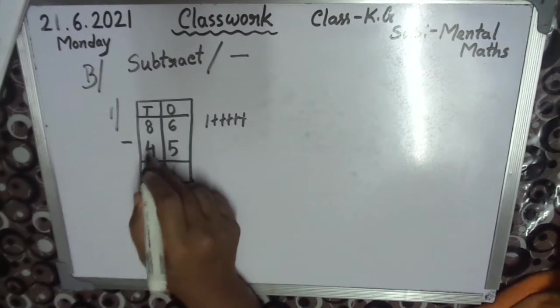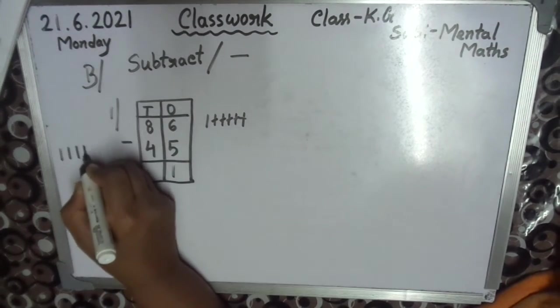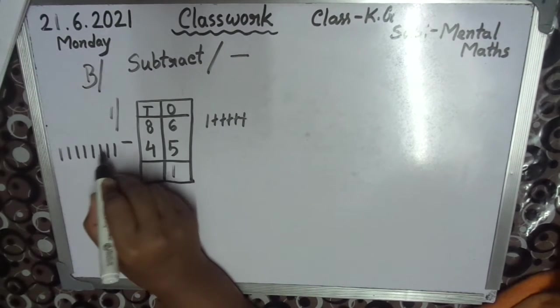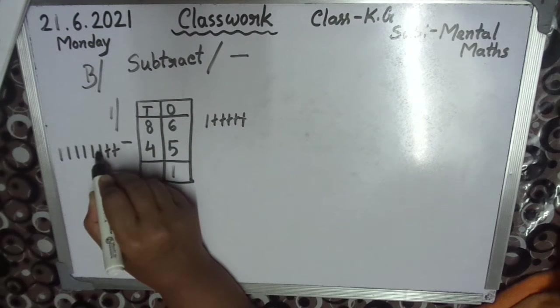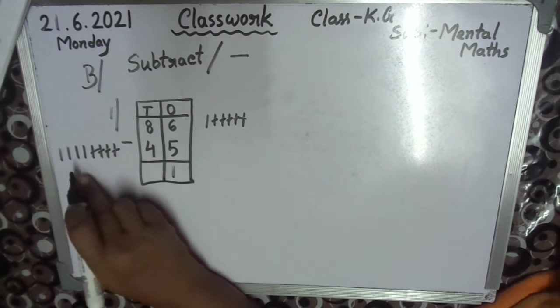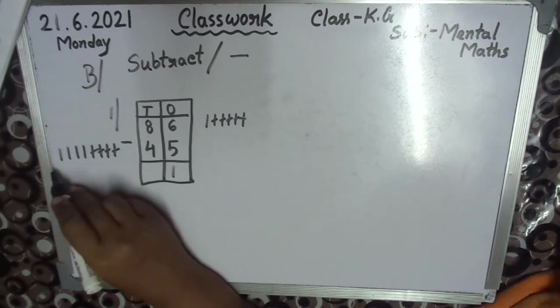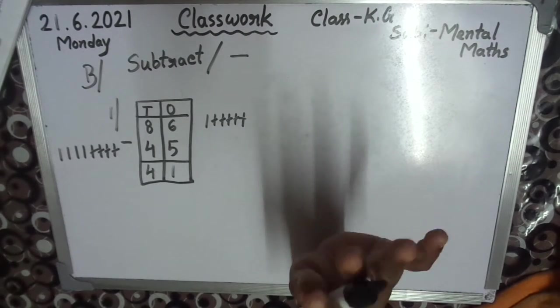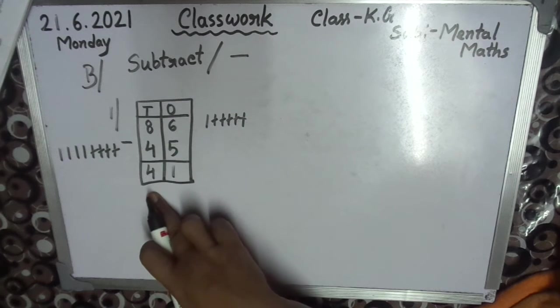8 minus 4. 1, 2, 3, 4, 5, 6, 7, 8. 4: 1, 2, 3, 4. Left 1, 2, 3, 4. Count 4 left. So answer 4. You see, 8 is big number then 4. So 4 take away and 4 left.